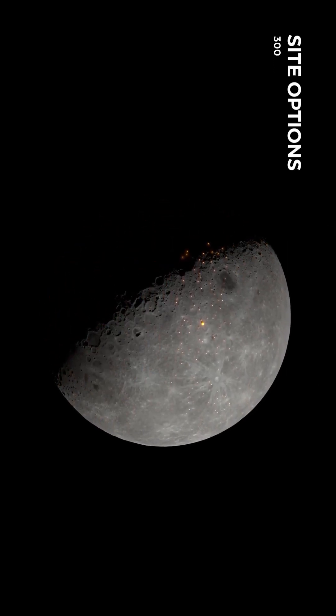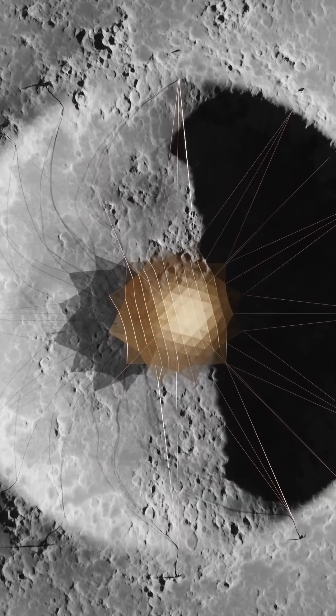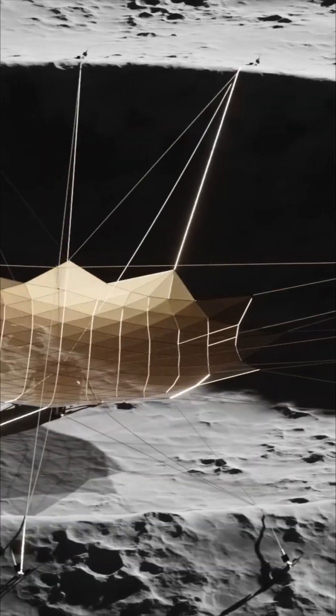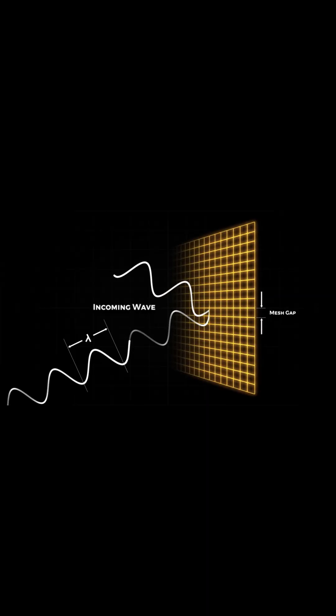They'll use special craters on the moon to do this. These craters will act like big dishes made of wire, bouncing radio waves.